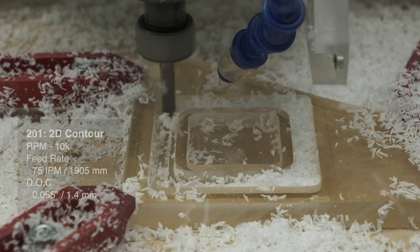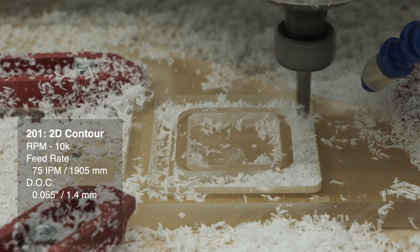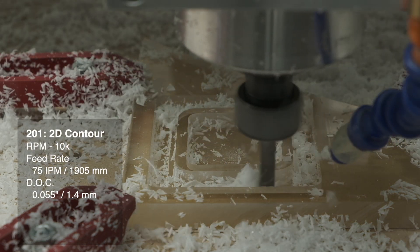And last but not least, for contouring, 10,000 RPM, 75 inches per minute, and a 0.055 inch depth of cut.